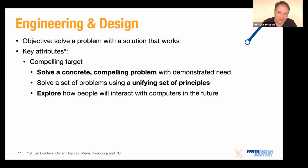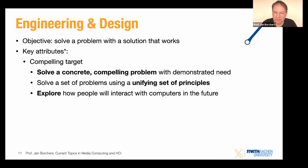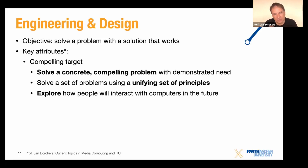A third kind of compelling target is if you are able to explore how people will interact with computers in the future. Back in 2005 we saw the first affordable prototypes of multi-touch tables, and a whole bunch of research sprang up — a whole conference was created around tabletop interaction. These tables weren't ready for mass production yet, but it was the tantalizing vision that this could become a really prevalent interaction in the future, so let's study how we can make the best use of it.